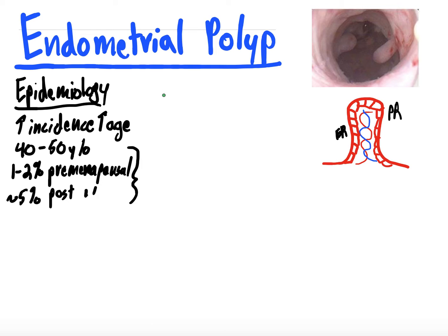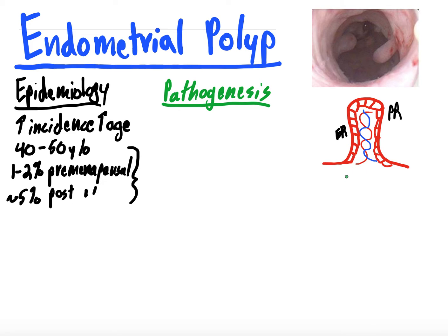So what are they? The pathogenesis is that they're actually just endometrial hyperplasia. It's an overgrowth of endometrial glands and stroma over a vascular core, which is a helix of blood vessels. It's a benign overgrowth — sometimes malignant or premalignant — of endometrial glands and stroma over a vascular core. They typically express both estrogen receptors and progesterone receptors on the tissue.